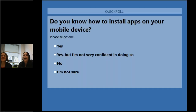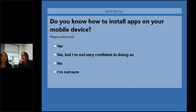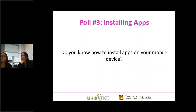Do you know how to install apps on your mobile device? It's looking like most of you are pretty confident in that, with a few no's and not-sures. For iOS and Android, you'll want to go to either the Google Play Store or the Apple App Store. You do a search, select one, install it, and it'll appear on your home screen or in one of your secondary screens.